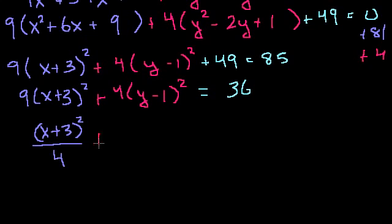And then you have plus y minus 1 squared. 4 over 36 is the same thing as 1 over 9. And all of that is equal to 1.